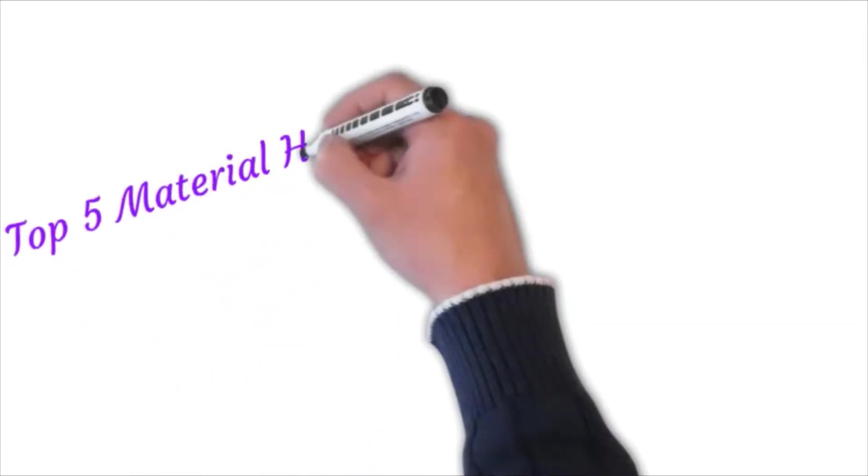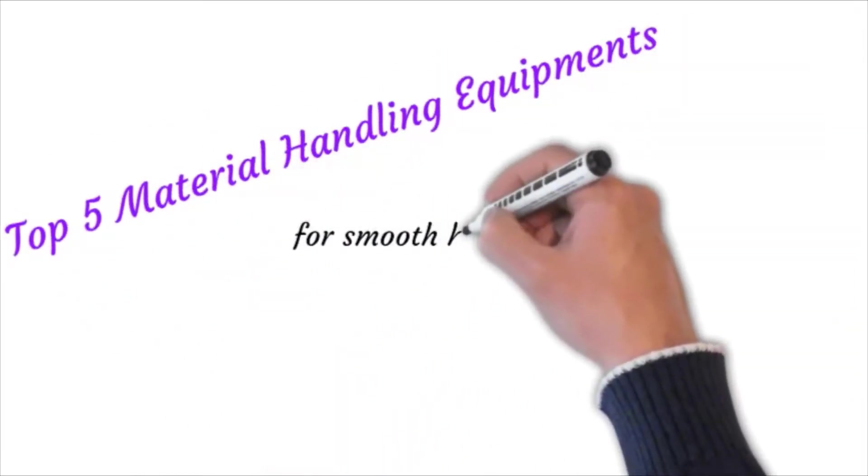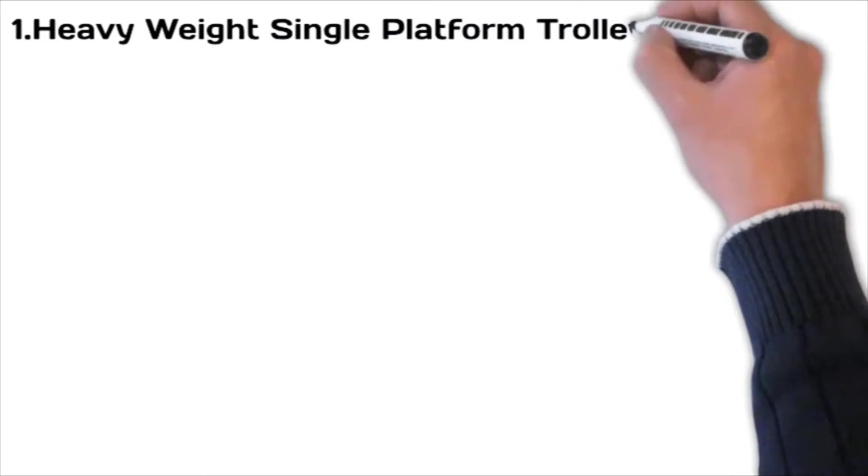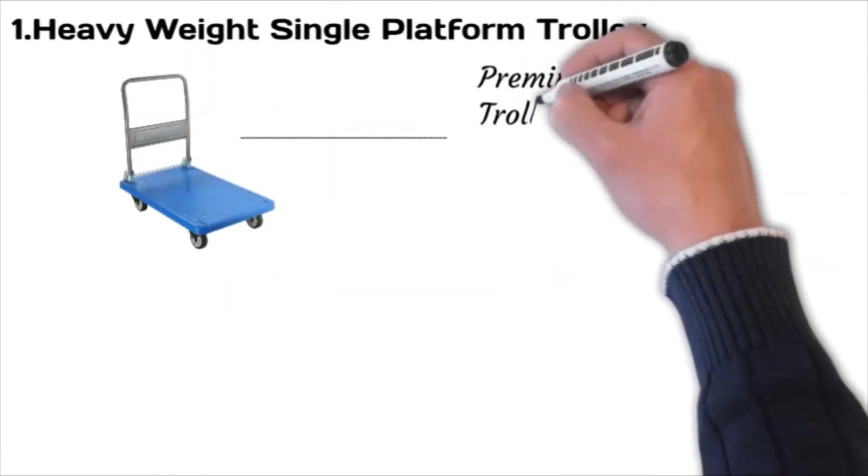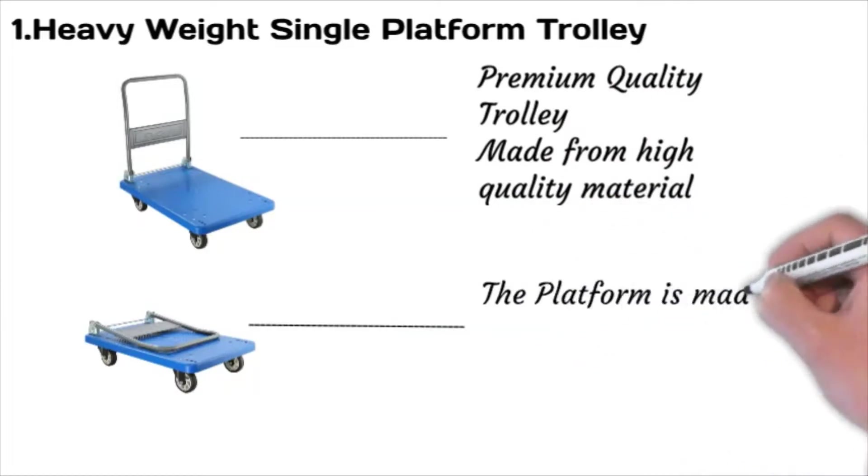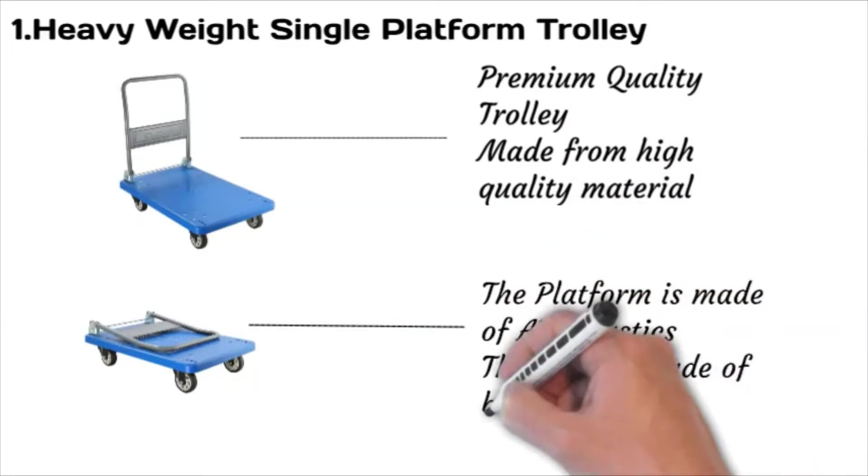Here are the top five material handling equipments for smooth handling of works and also for time saving. Number one, heavyweight single platform trolley. Premium quality trolley made from high quality material. The platform is made of ABS plastic. The body is made of high quality steel.